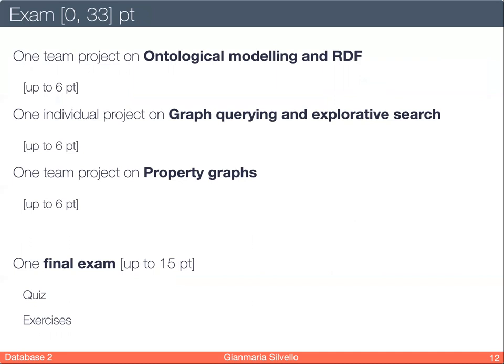The exam. The minimum grade is zero and the maximum is 33, which basically means summa cum laude. There will be three projects. One team project on ontological modeling and RDF. I will give you this project by the end of October and you will have a little bit more than one month to complete it in a group. Then you will present the results to the class in a public presentation. This project will provide from zero to six points.